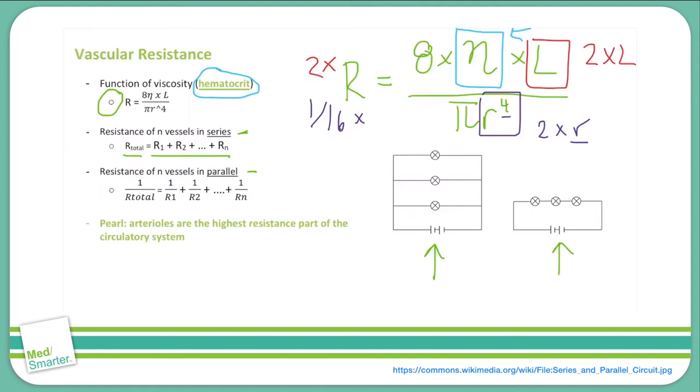Now let's work through an example to help us understand this. Let's imagine we have three vessels in series like we see here, and each has a resistance of two. So what's the total going to be? It's going to be two plus two plus two equals six. It's just the sum of each individual resistance.